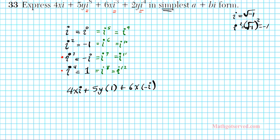Plus 2y. i to the fourth must be reduced since the power is greater than 1. i to the fourth is 1 also. So times 1. Let's go ahead and simplify that. We have 4xi plus 5y minus 6xi plus 2y.